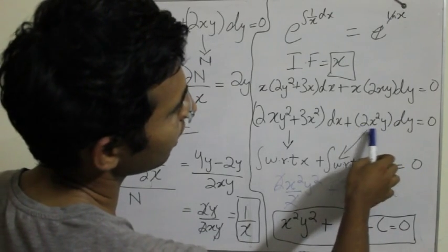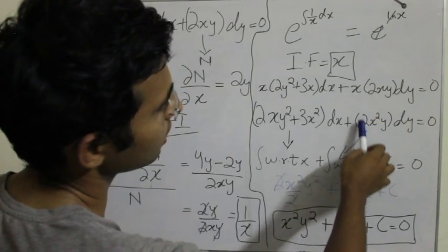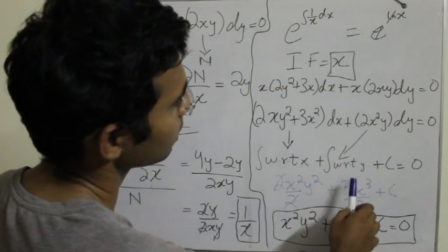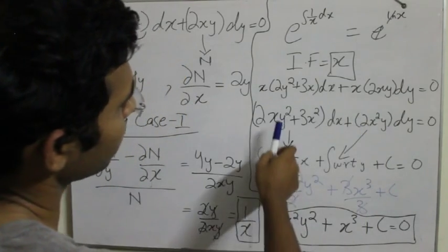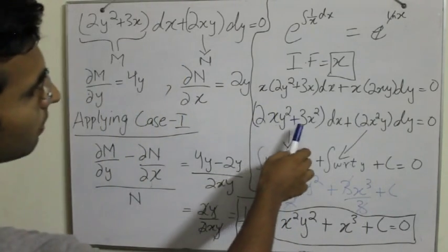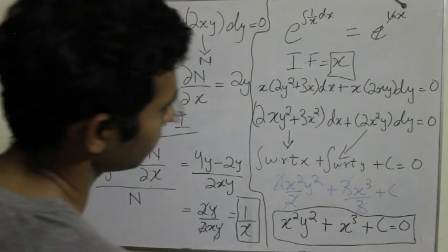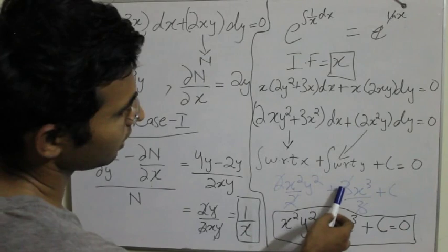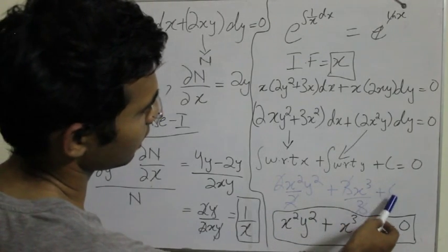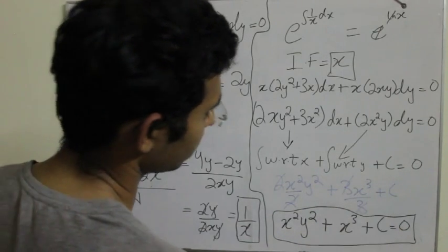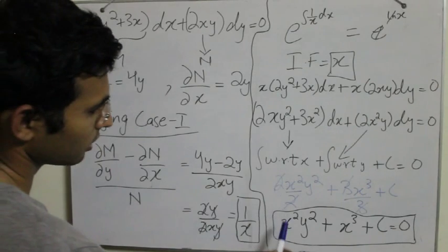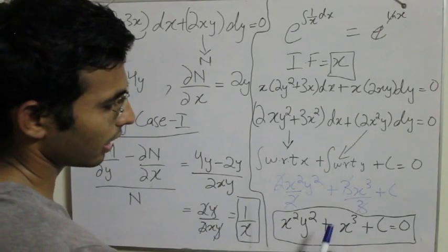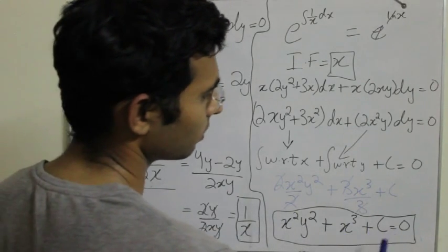So this does not have y only, it has x also. So this cannot be considered. So I just integrate 2xy squared plus 3x squared. 2x squared upon 2 y squared plus 3x cubed upon 3 plus the constant of an integral. So I get x squared y squared plus x cubed plus c is equal to 0. And that is the final answer.